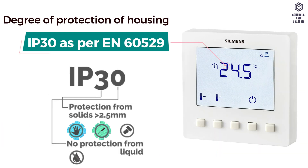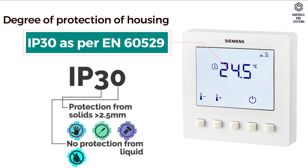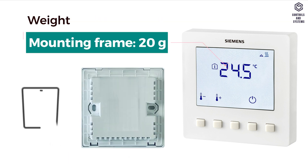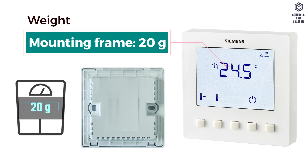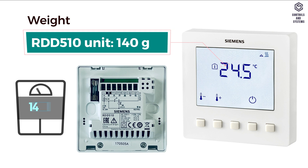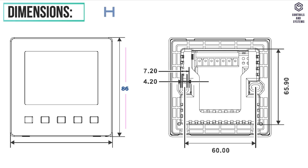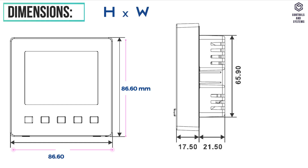Degree of protection for the housing is IP30. Weight: the mounting frame is 20 grams and the RDD510 unit is 140 grams. Dimensions: height 86.60 mm, width 86.60 mm, depth 39 mm.